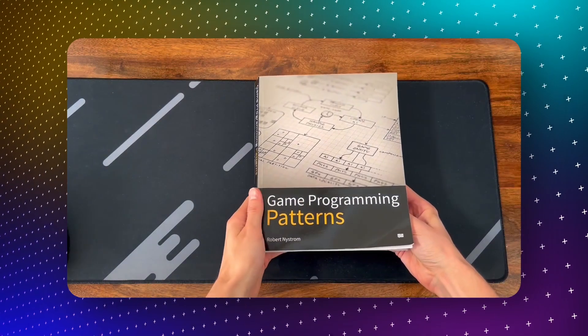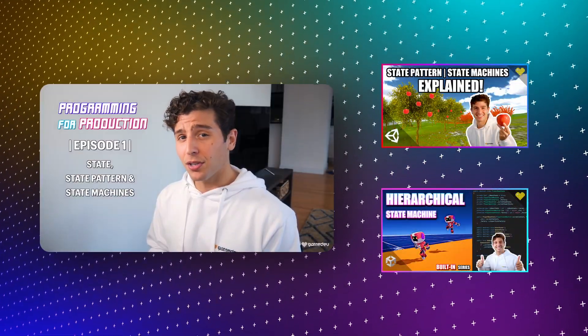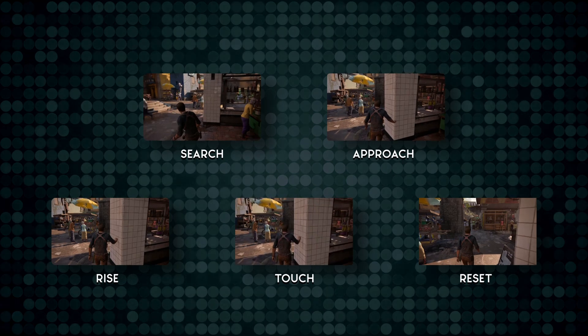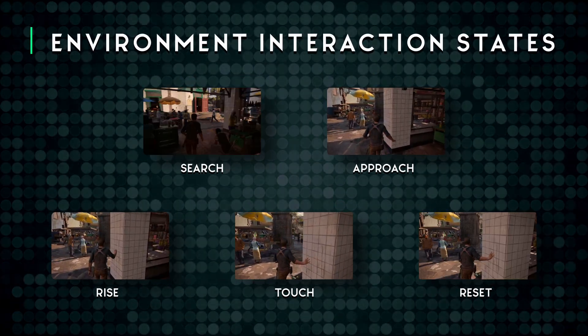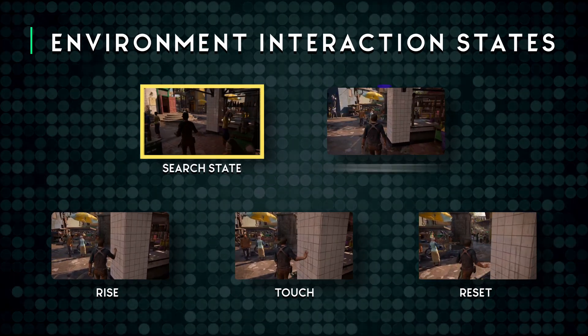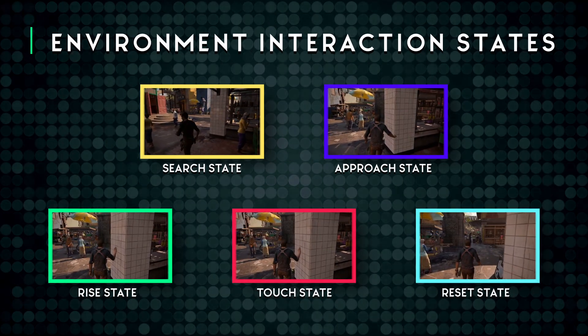Enter the state pattern and state machines — one of the most popular design patterns in game development, and my personal favorite featured here on iHeartGamedev. The state pattern allows us to separate logic into individual states which contain code only relevant to that state. Looking at our animation list, we can consider each step as its own state. Naming each according to its purpose, we have the search state, the approach state, the rise state, the touch state, and the reset state.